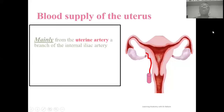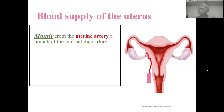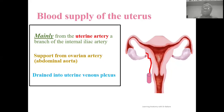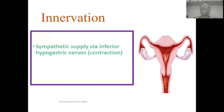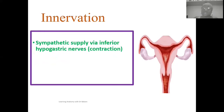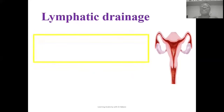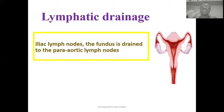The major blood supply of the uterus is from the uterine artery, which is a branch of the internal iliac artery. There is also a supportive supply from the ovarian artery, which is a branch of the abdominal aorta. Venous drainage is into the uterine venous plexus. Sympathetic innervation is via the inferior hypogastric nerve (producing contraction), while parasympathetic supply is via the pelvic splanchnic nerves (S2–S4), producing inhibition and vasodilation. Lymphatic drainage is through the iliac lymph nodes; the fundus specifically drains into the para-aortic nodes.